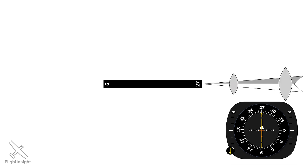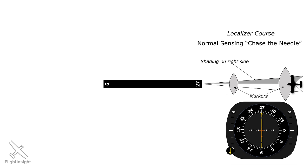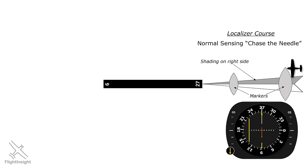Now let's get into some of the trickier knowledge test questions, which are based on localizers. The test starts by showing you runway 27. Then it gives you a localizer feather. These two football symbols are marker beacons. This is the localizer course — we know it's the localizer course because the shading in the feather is on the right side, and because of the presence of those marker beacons. A localizer course uses normal sensing, where we'll chase the needle. In normal sensing, if we deviate left of course, the needle swings right, and if we go right of course, the needle swings left. We need to chase the needle to get back on course.